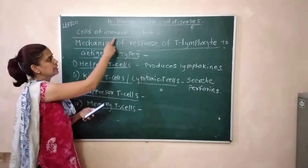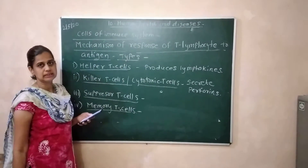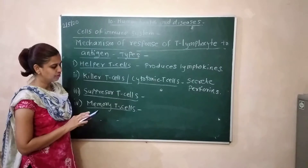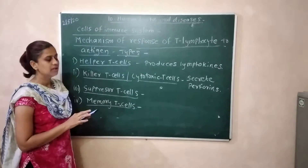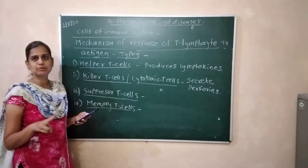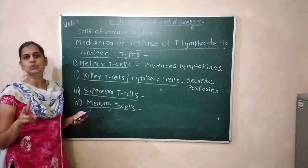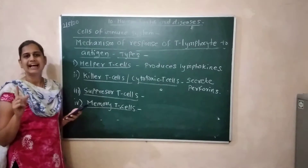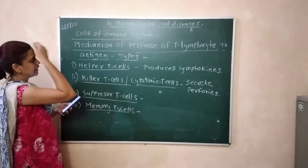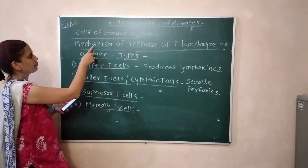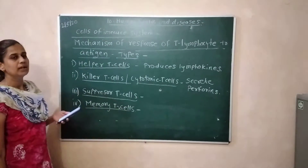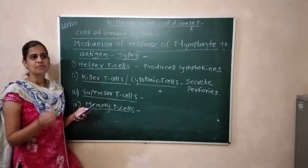We studied about cells of the immune system. In those cells of the immune system, there are lymphocytes and antigen presenting cells. In lymphocytes, there are two types: B-lymphocytes and T-lymphocytes. In this lecture, we studied about the mechanism of response of T-lymphocytes to antigen.